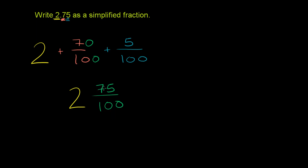So let's see if you divide both of them by 25. 75 divided by 25 is 3, and 100 divided by 25 is 4.